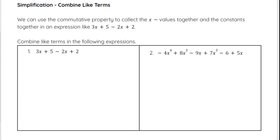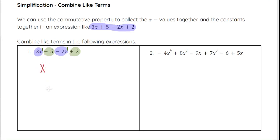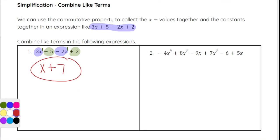When combining like terms, we use the commutative property to collect x values together and constants together. For example, with 3x plus 5 minus 2x plus 2: the terms 3x and negative 2x are like terms because they are the same variable with the same exponent. The 5 and 2 are also like terms as constants with no variables. So 3x minus 2x is x, and 5 plus 2 is 7, giving us x plus 7.